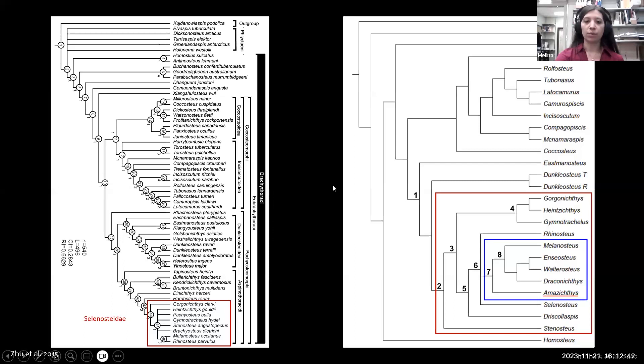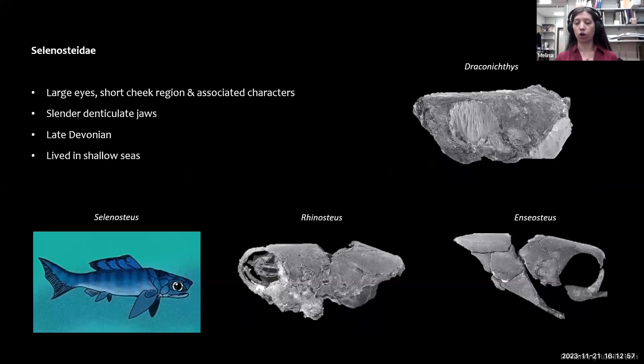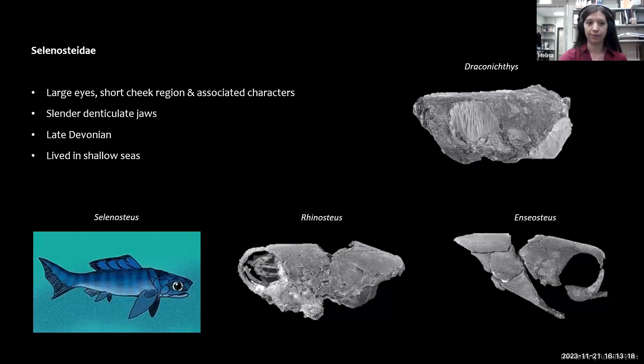We placed Amasichthys in the phylogeny and concluded it is a selenosteid — the family Selenosteidae. Selenosteids have in common large eyes and associated characters including a short cheek region, and very slender jaws with small teeth, as we can also see in Amasichthys. They all date to the late Devonian, most from the Frasnian, but a few from the Famennian including this one, and some lived in shallow seas.